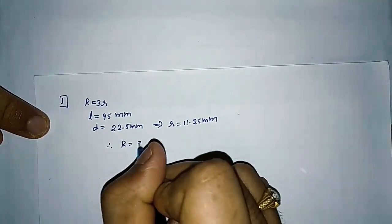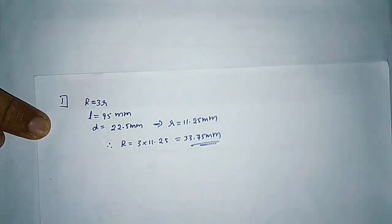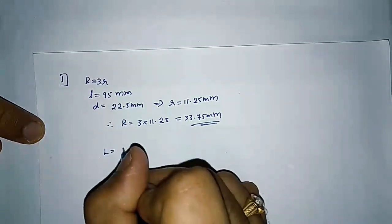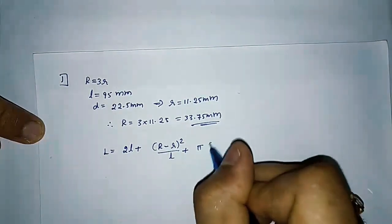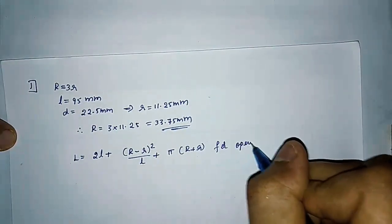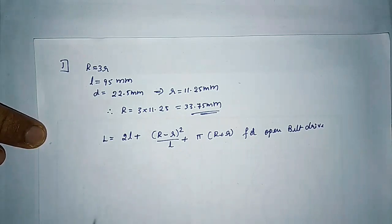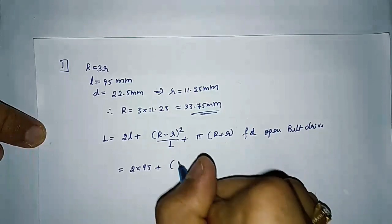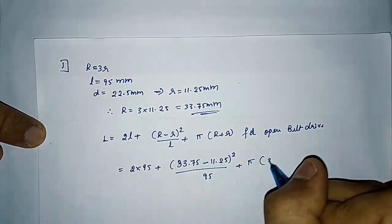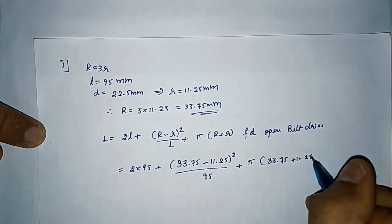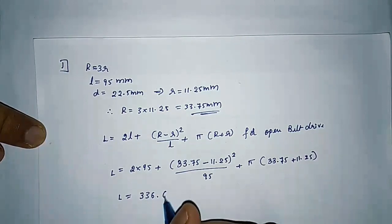From the first equation we can find out capital R as 33.75 mm. We know the equation to find out length of open belt drive as L is equal to 2L plus (R minus r) squared divided by L, plus pi into (R plus r). Substituting all values: 2 into 95 plus (33.75 minus 11.25) squared divided by 95, plus pi into (33.75 plus 11.25). Calculating, we get the answer as 336.69 mm.